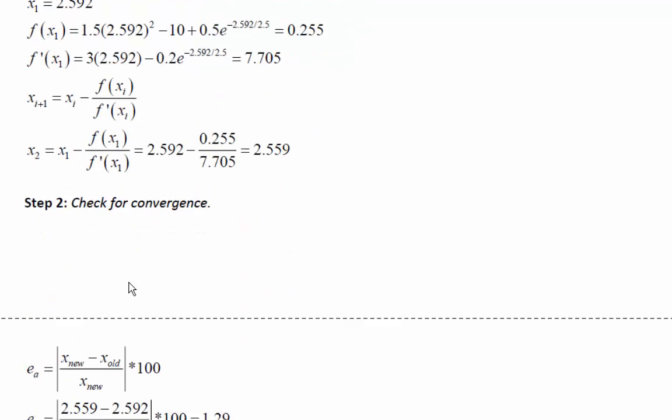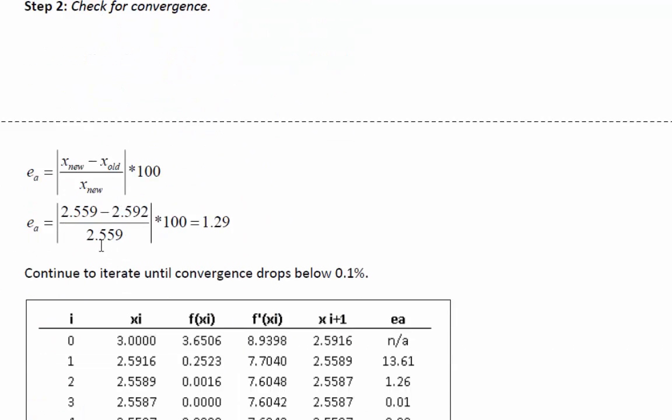We check the convergence: 2.559 minus 2.592 divided by 2.559, absolute value times 100. We're down to 1.29% error. Much better, and we're converging much quicker on the actual root.